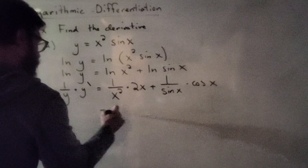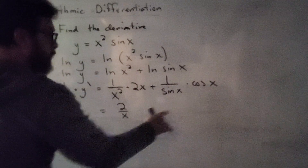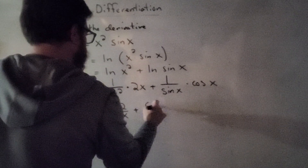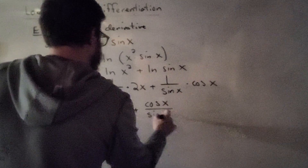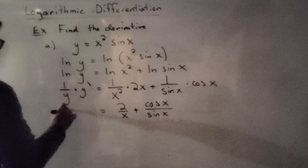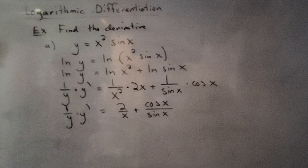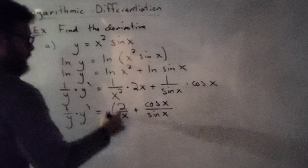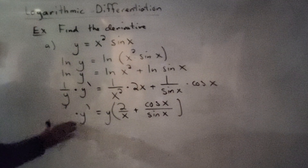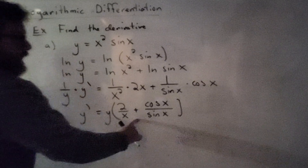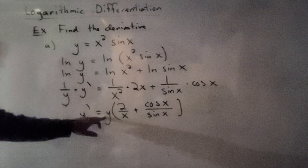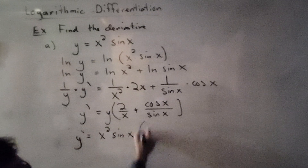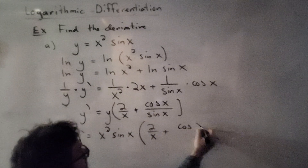Simplifying: the x's cancel so this becomes 2 over x, and cosine over sine is cotangent of x — but I'll leave it as cosine of x over sine of x. So we have 1 over y times y prime equals 2 over x plus cosine of x over sine of x. To isolate y prime, multiply both sides by y.